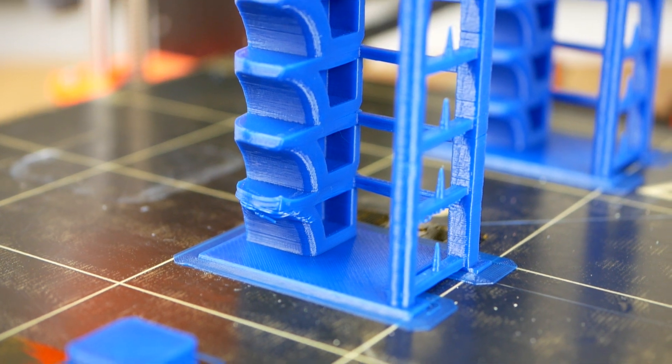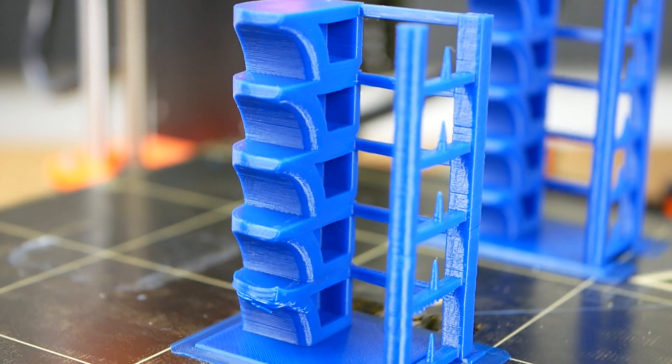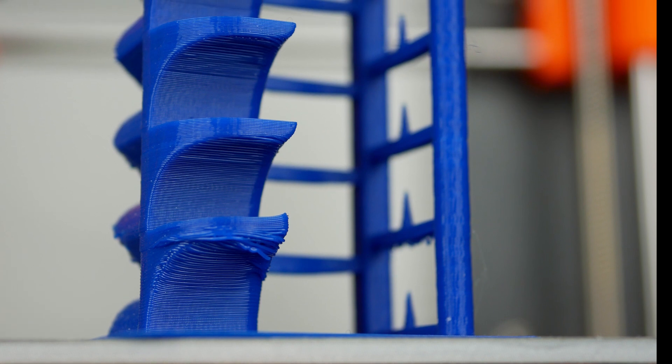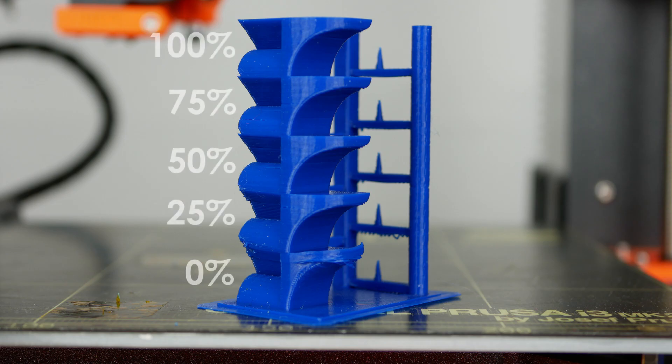For the next test I varied cooling fan speed between 0% and 100%. Up to 50% you can see a bad finish of overhanging surfaces due to the lack of cooling air. 75% and 100% look completely the same, so I went with 75% also for the maximum part strength.